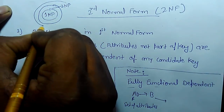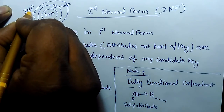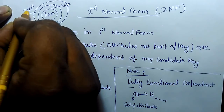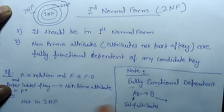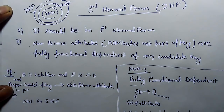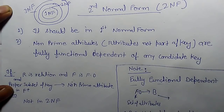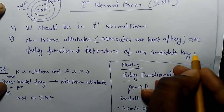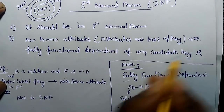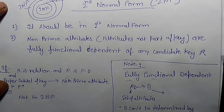Similarly, there is Third Normal Form (3NF). If a relation is in 3NF, it is already in 2NF and 1NF. The first point for 2NF is that it should be in First Normal Form, and second, non-prime attributes must be fully functionally dependent on any candidate key in relation R.